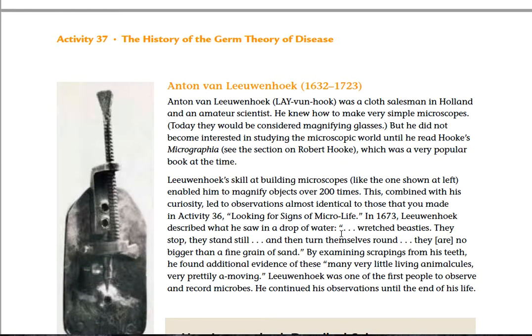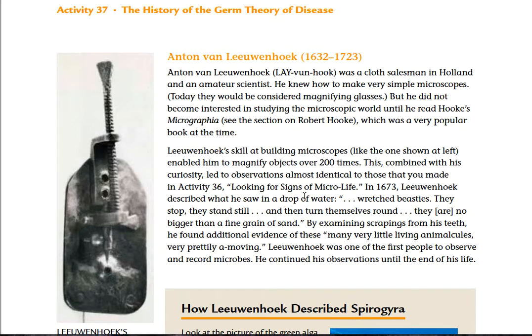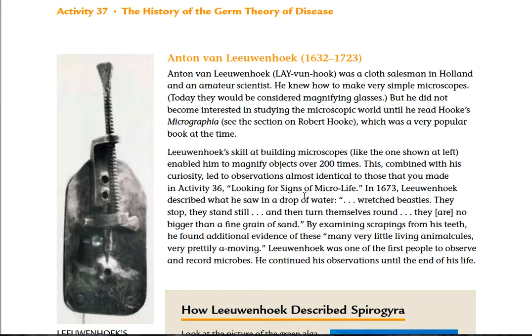On to the next scientist: Antoine van Leeuwenhoek, from 1632 to 1723. Leeuwenhoek was a cloth salesman in Holland and an amateur scientist. He knew how to make very simple microscopes — today they would be considered magnifying lenses. But he did not become interested in studying the microscopic world until he read Hooke's Micrographia, which was a very popular book at the time. Leeuwenhoek's skill at building microscopes enabled him to magnify objects over 200 times.